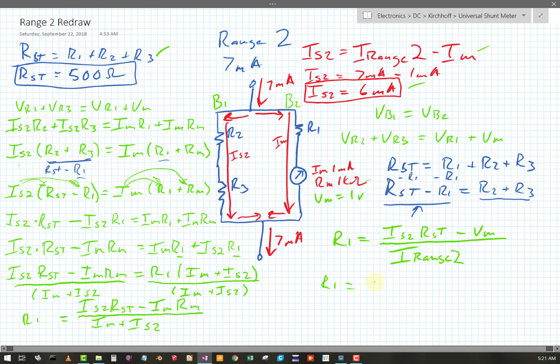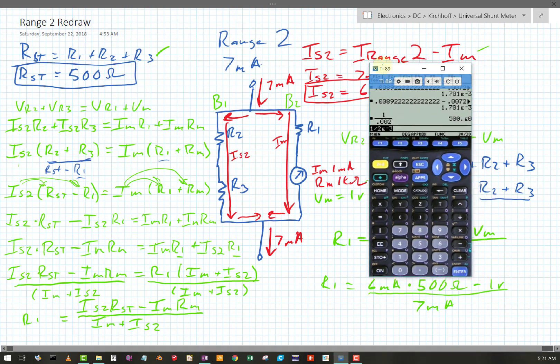R1 equals 6 milliamps times 500 ohms. That's going to be a voltage minus 1 volt and that's all over 7 milliamps. Okay. All right. Well, let's solve for that thing. So this current times resistance is going to be a voltage. Let's wake up the old calculator. All right.